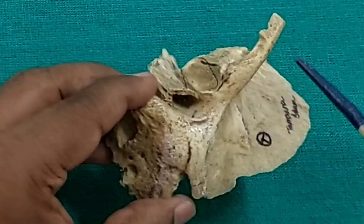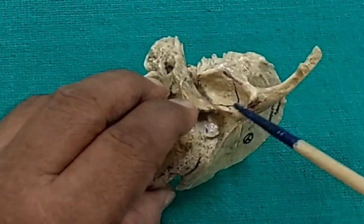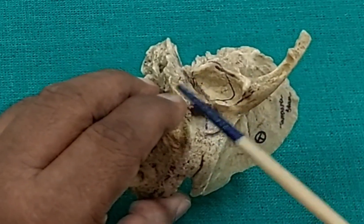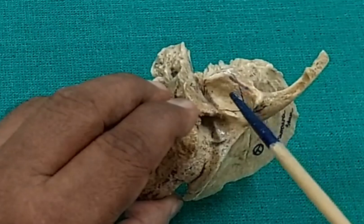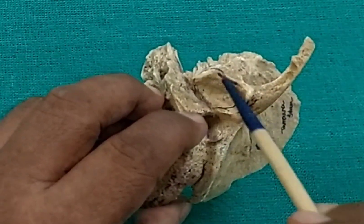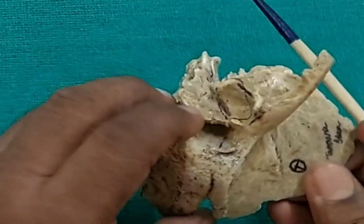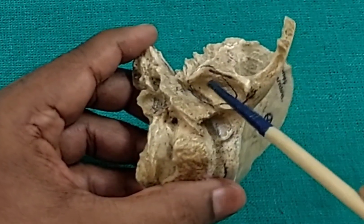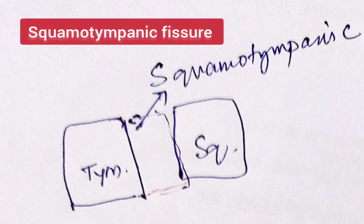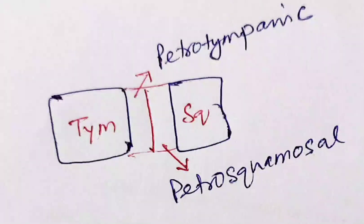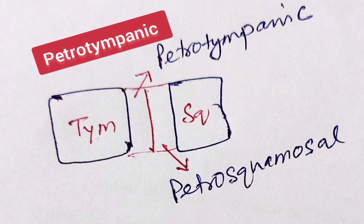Another important feature of the squamous part is the mandibular fossa. The anterior part of the mandibular fossa is formed by the squamous part, and the posterior part is formed by the tympanic part. The squamous part is the articular part, where the head of the mandible articulates with the mandibular fossa, forming a synovial temporomandibular joint. There is a fissure between the squamous part and the tympanic part called the squamotympanic fissure, which is divided by a projection from the petrous part into the petrotympanic fissure and the petrosquamotympanic suture.